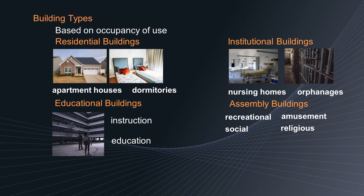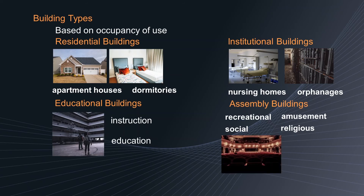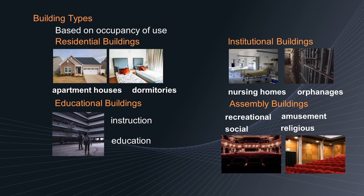So theaters, assembly halls, exhibition halls, restaurants, museums, and club rooms can be examples of assembly buildings.